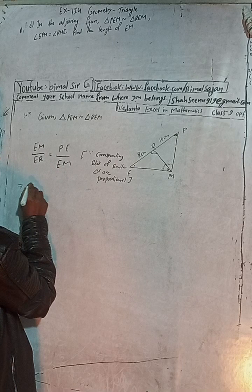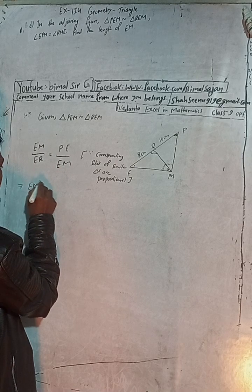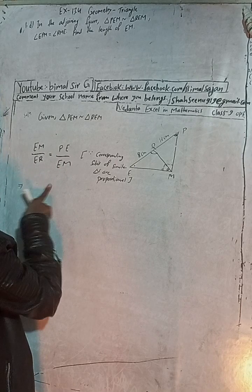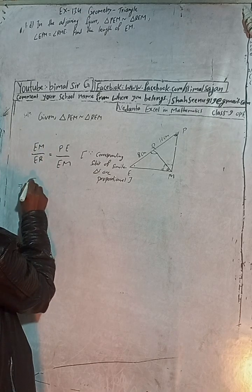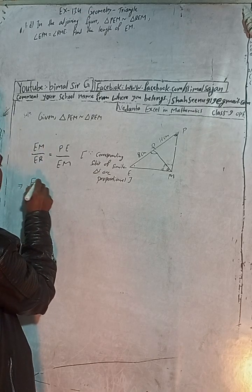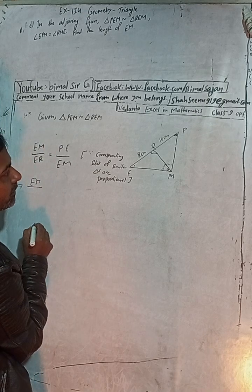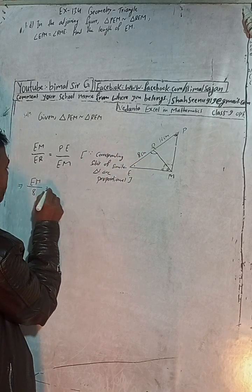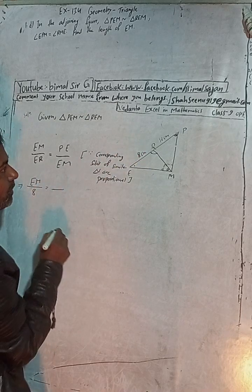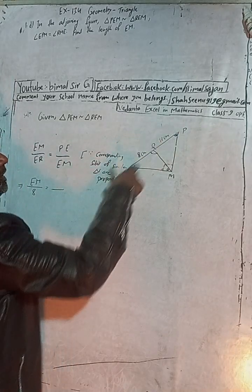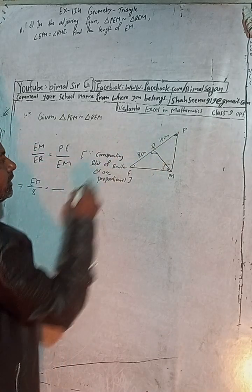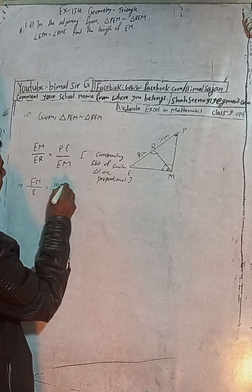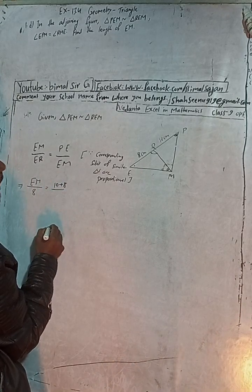So EM into EM is EM squared. EM squared is equal to — putting in the values — ER is 8, so write 8. PE is 10 plus 8, which equals 18.